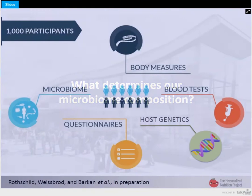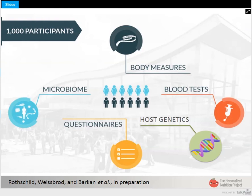We assembled a large cohort of over 1,000 participants. We measured host genetics via Illumina SNP arrays, and gut microbiome collected through the OmniGene gut kit by DNA Genotech. We measured both 16S and metagenomic microbiome composition and function. Alongside those omics measurements, we also measured an extensive profile from each individual including anthropometrics, various body measures, blood tests, and medical background and food frequency questionnaires.